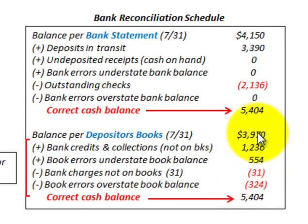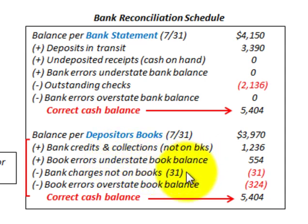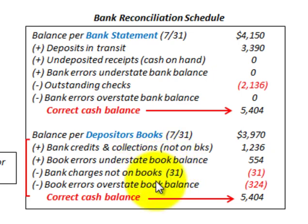We take the beginning balance and net all these additions and reductions to come up with the ending balance, or the correct cash balance for the company. We're going to concentrate specifically on book errors that understate or overstate the book balance, looking at them in terms of checks that were transcribed or entered incorrectly.